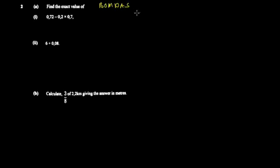The next question says find the exact value of 0.72 minus this times this. Here you use BODMAS — an acronym for the hierarchy of operations: Brackets first, then Orders (powers), then Multiplication and Division, then Addition and Subtraction.